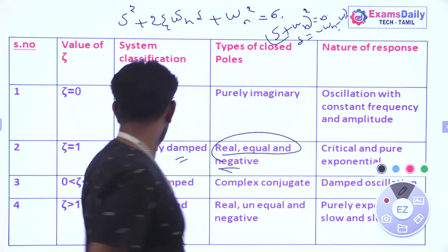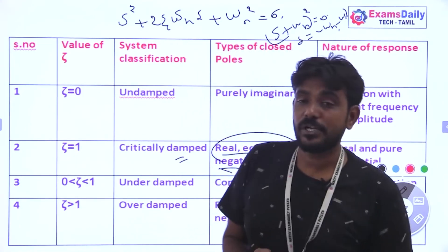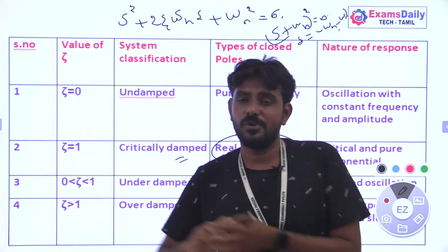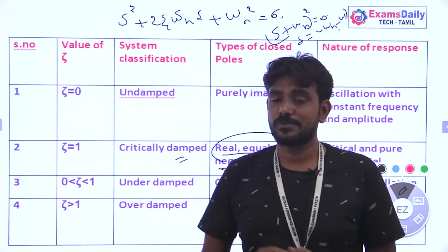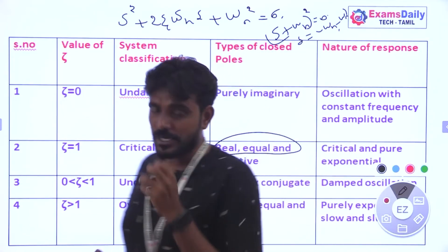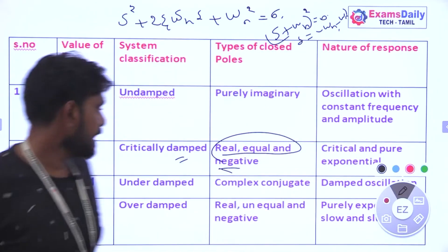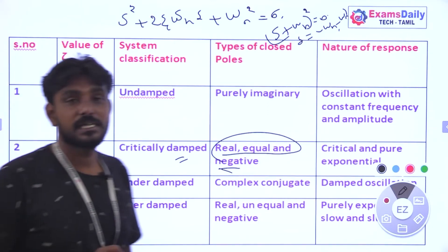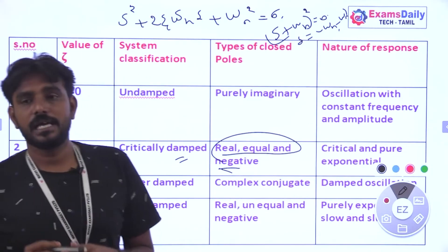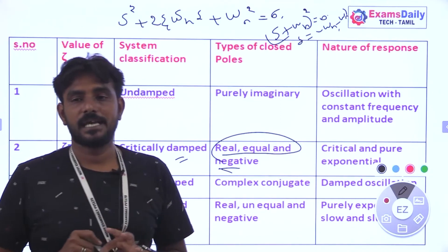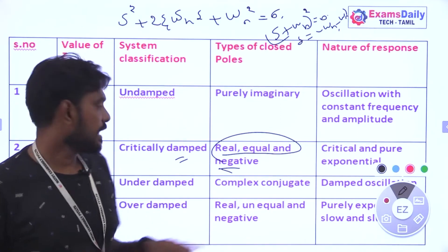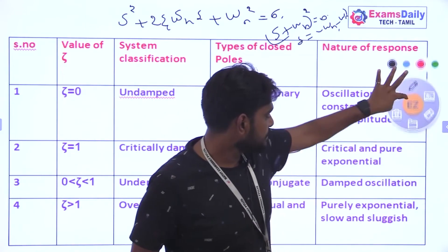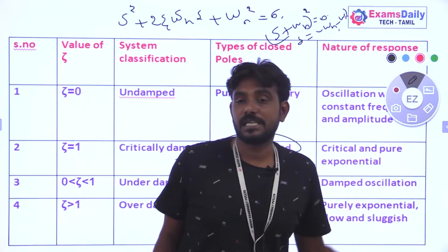Third case: when ζ is between 0 and 1, the system is underdamped. Most control system questions involve this case — your system should be underdamped. The poles are complex conjugates of the form α ± jβ, and the natural response is a damped oscillation.